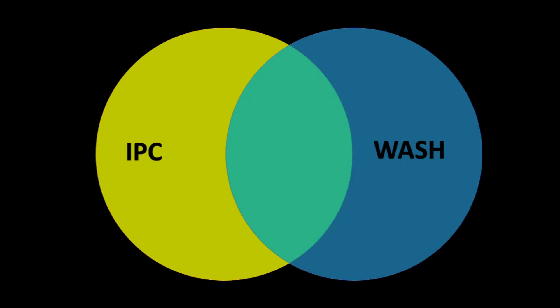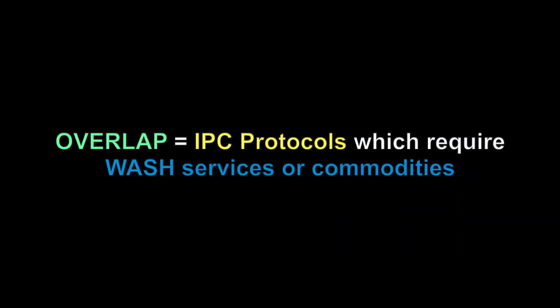What we want to focus on today is the green area in the middle where the two circles overlap. This refers to the IPC protocols which require WASH services or commodities in order to be performed properly.